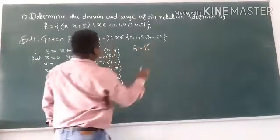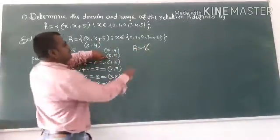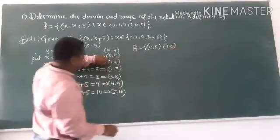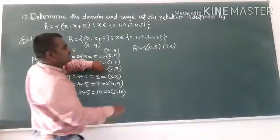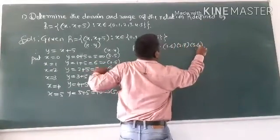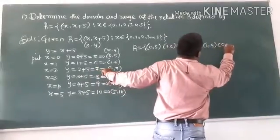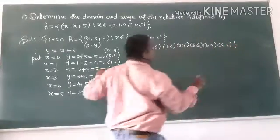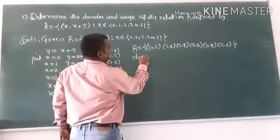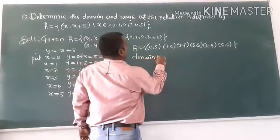Check each one. I can express the relation R as: (0, 5), (1, 6), (2, 7), (3, 8), (4, 9), (5, 10). This is the complete set of values.